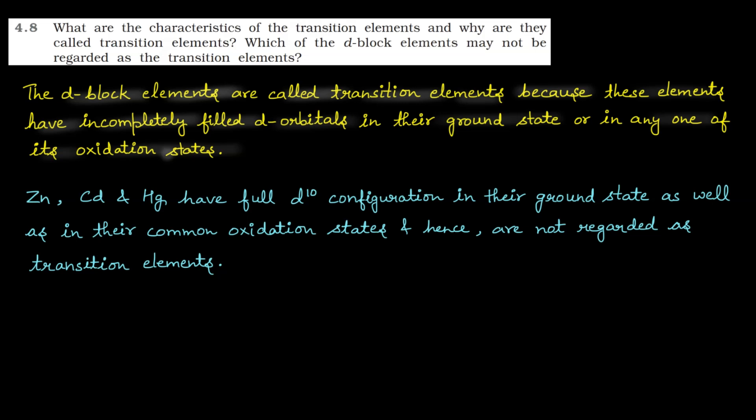Which elements are such? D-block elements which we don't call transition elements. You have zinc, cadmium and mercury. This is why? Because they have full d10 configuration in their ground state as well as in their common oxidation states and hence are not regarded as transition elements.